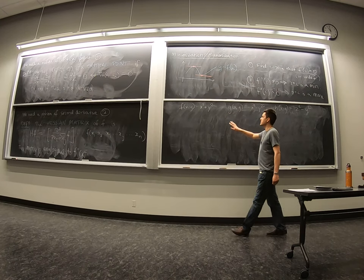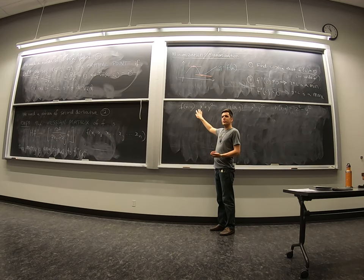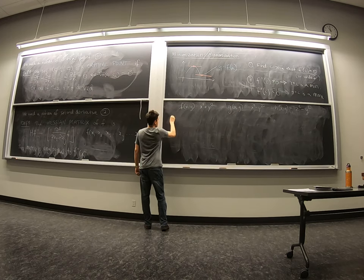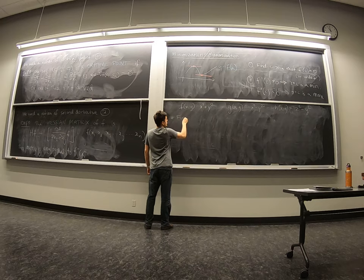Okay, so for the Hessian of f, we need all the second-order partials of f. To do that, we'll get the first order.